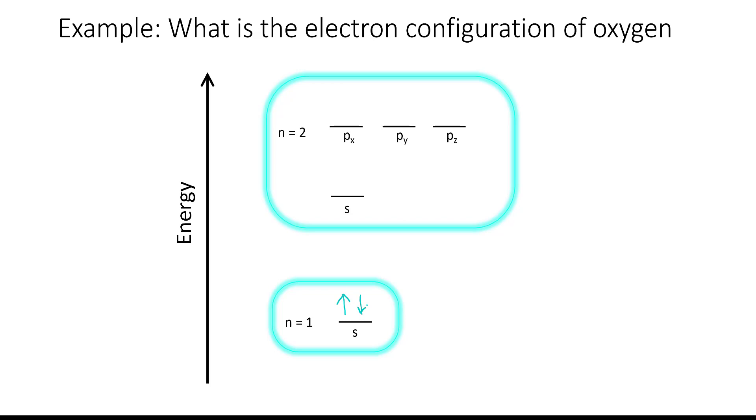Now we have six more electrons left, so we're going to put two of them into the next higher energy orbital, which is the 2s orbital. And again, we're going to put them in spin paired.